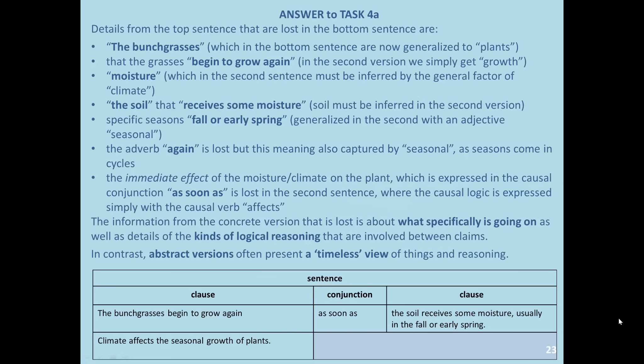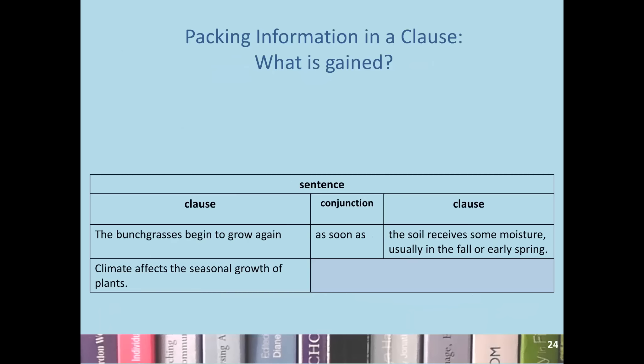Here's the answer for task 4a. These are examples of the kinds of specific details that are lost when we pack information. They include information about what is going on specifically, and the details of the kinds of logical reasoning that is involved. They add detail, place the idea in the material world, and by using conjunctions they show dynamic reasoning between ideas expressed in the clauses. In contrast, the abstract version often presents a timeless view.